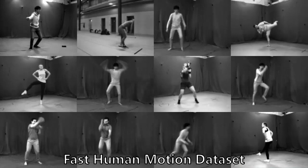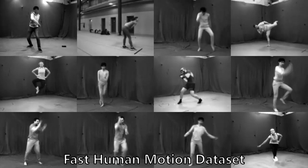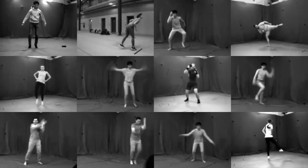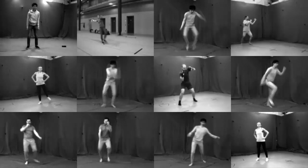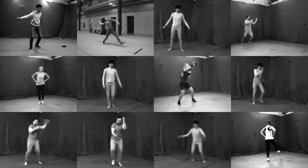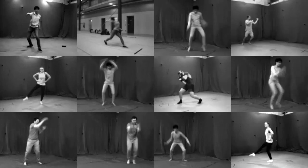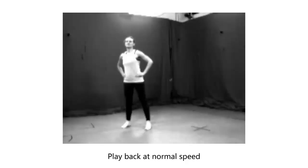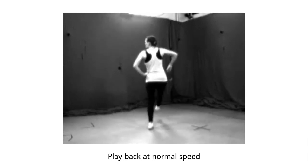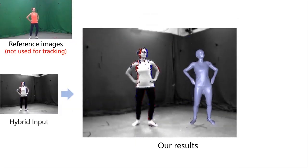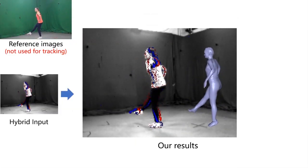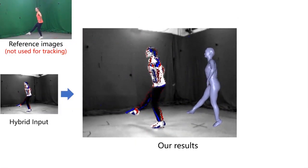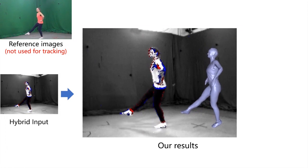Now we show more tracking results. For evaluation, we captured a new dataset consisting of 12 sequences of 6 actors performing fast and challenging motions. Note the severe motion blur caused by fast motions. Based on only the hybrid input from a single event camera, our method captures the high frequency motion details accurately.